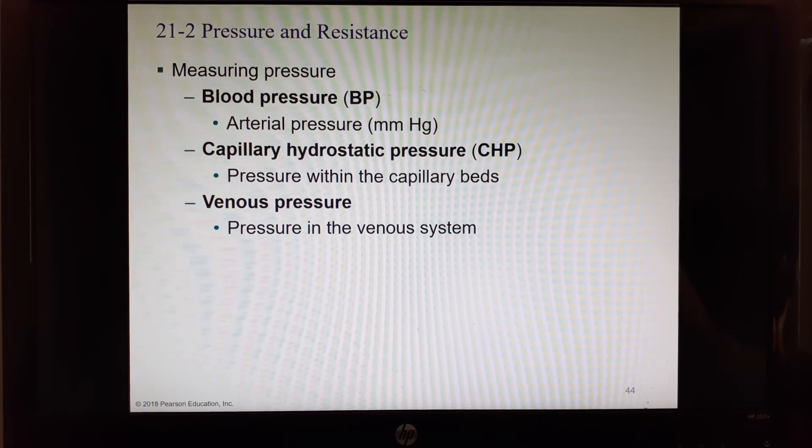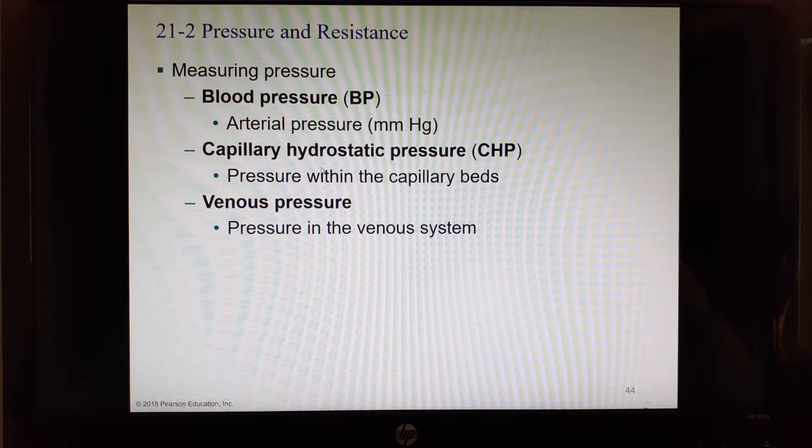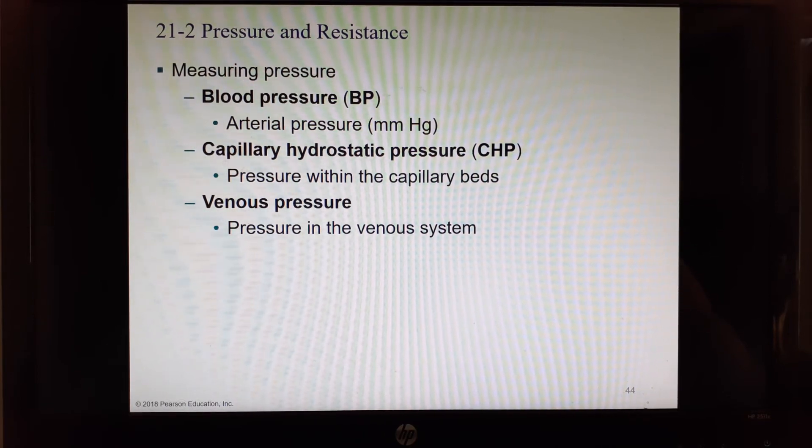How do we measure pressure? We have our blood pressure, which is usually an arterial pressure. We're looking at the pressure in an artery and we measure it in millimeters of mercury. We have a device that allows us to measure the pressure by looking at a column of mercury within a glass cylinder. There's also capillary hydrostatic pressure. This is not one we measure, really, but this is the pressure that is still within the bloodstream as it enters the capillary beds—any leftover blood pressure from the heart squeezing. And then we have venous pressure, which is whatever pressure is in the venous system.